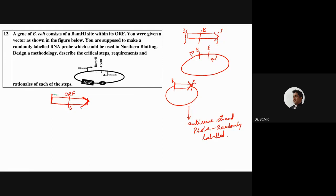The primers should be designed such that I can have an EcoR1 linker within the region of the fragment on one side. On the other side there is a problem - if I put a BamH1 linker I cannot use BamH1 to cut because there is a BamH1 site within the open reading frame. So there are two ways to do it.